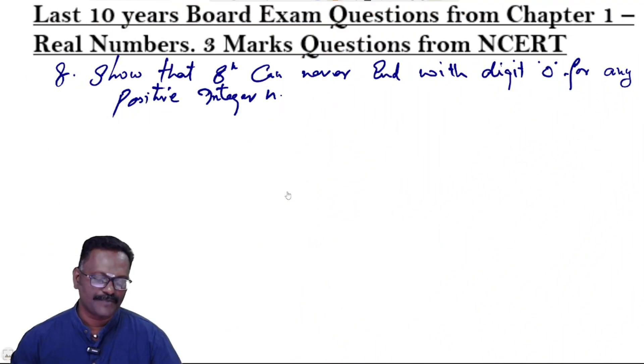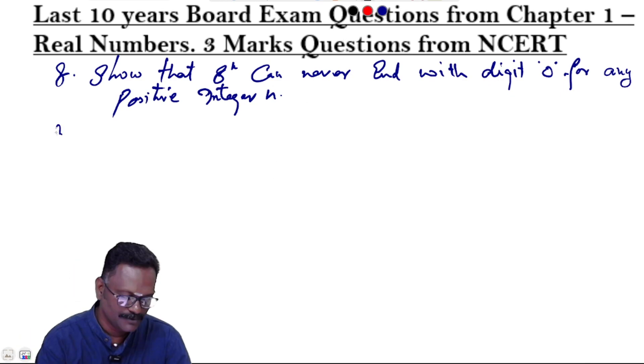The 8th question shows that 8^n can never end with a digit 0 for any positive integer n. Can you solve it? The solution. So,